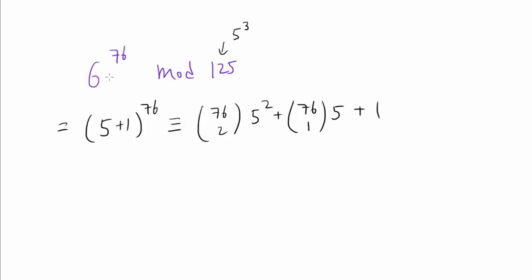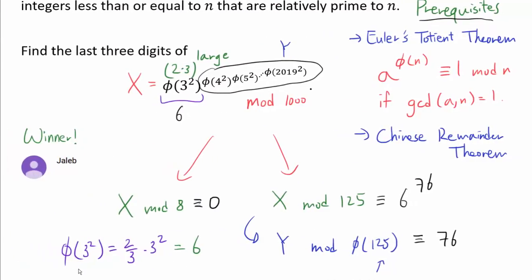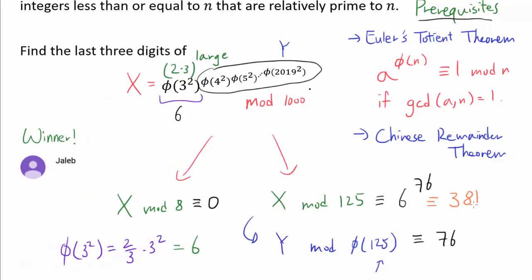Because when you expand this using binomial theorem, every term is going to have 5 raised to 3 or larger power. And all of those are gonna go away when you take mod 125. So these are the only remaining portions. And 76 choose 2, that's 76 over 2 times 75. And 75 contributes another factor of 5, which in addition to 5 squared, makes this entire thing 0 as well in mod 125. So again, we only have to consider 76 times 5 plus 1, which is 381. So we know 6 to the 76 mod 125 is 381. So that's telling us X mod 125. And since we're looking at mod 125, 381 is congruent to 6 because 381 minus 375 gets us 6.